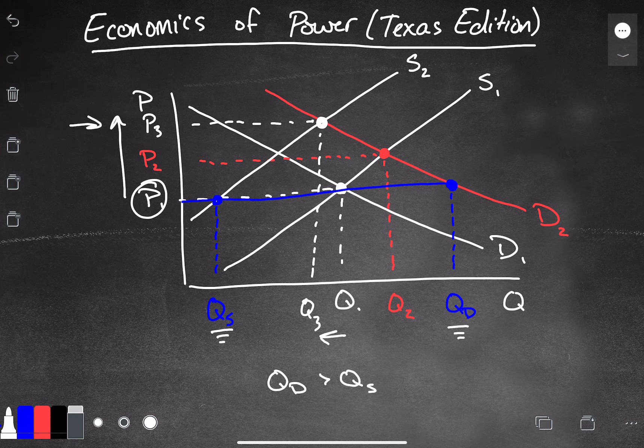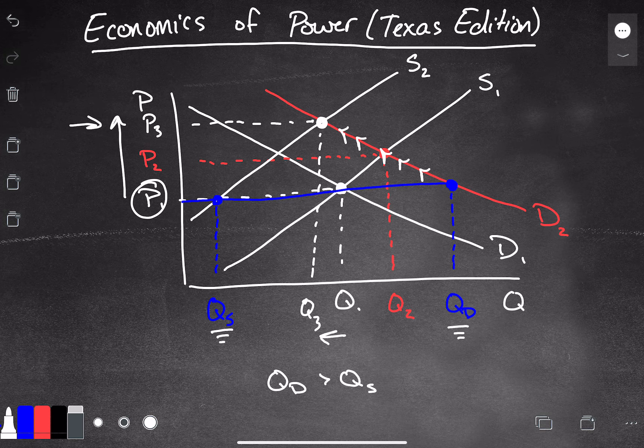In normal markets, what we would expect is the price to rise. And what would happen there is we would decrease the quantity demanded, right, and we would increase the quantity supplied.